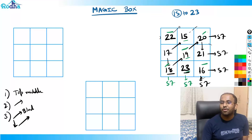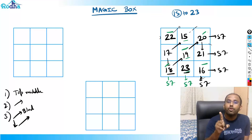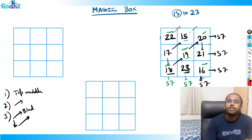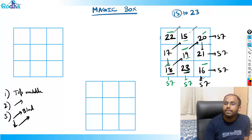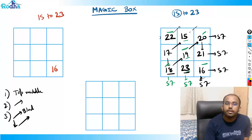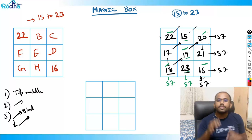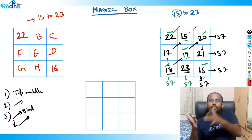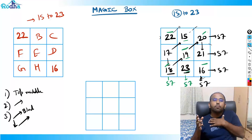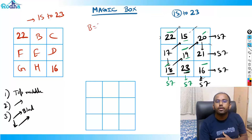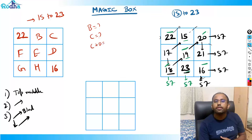Let's form one more example. This concept makes for a great LRDI set. For instance, I could give you a 3×3 magic box with numbers 15 to 23, reveal one number (say 16 or 22), label the other cells A through H, and ask: what is B? What is C? What is C + D? This is the kind of set that can appear in CAT.